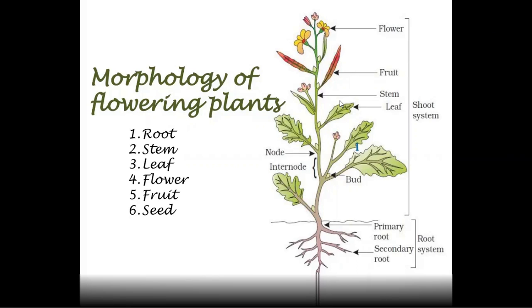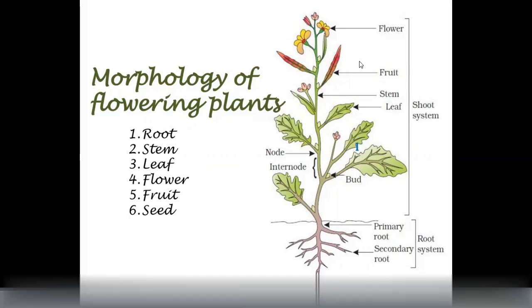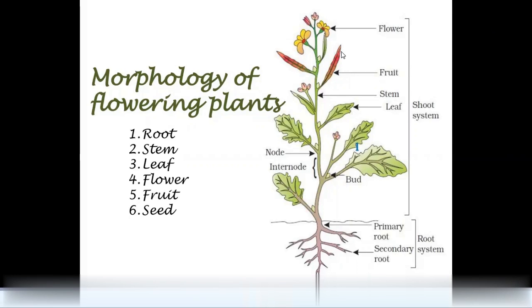So far, we have covered this topic: root, stem, leaf, flower, fruit, and seed. This is an angiospermic plant, which includes flower and fruit.